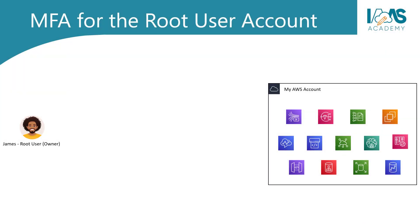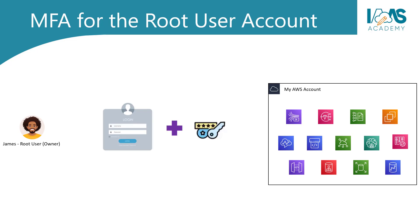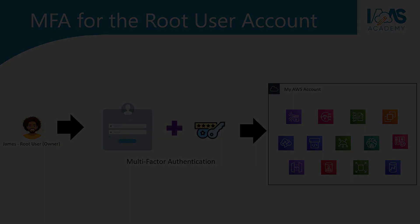By now, you understand that the root user is the most privileged user in your AWS account and has access to all of the services on AWS within your account. With multi-factor authentication, you must prove who you are using multiple factors: one with what you know, which is your username and password, and two with what you have, which is your one-time pin.